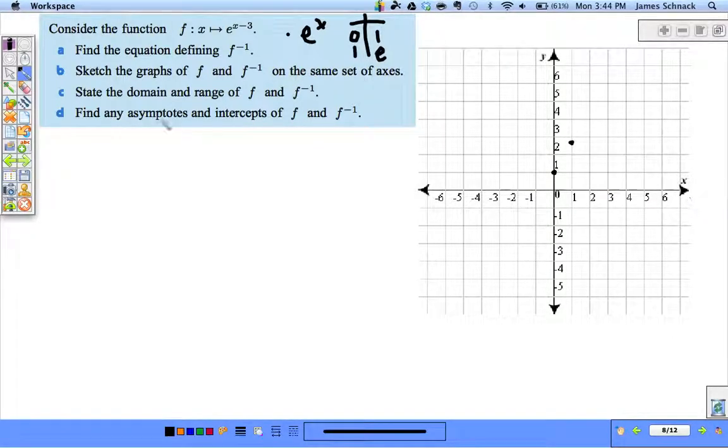What kind of shift is happening here? What does this minus three do? It shifts everything to the right three. So our asymptote is still going to be at the x-axis. Our horizontal asymptote is going to be y equals zero.